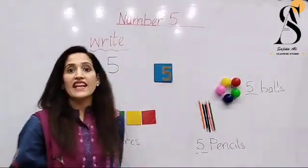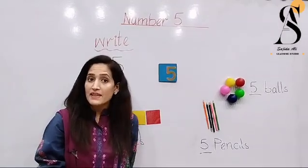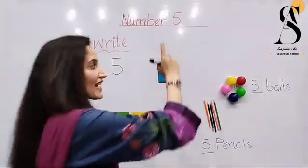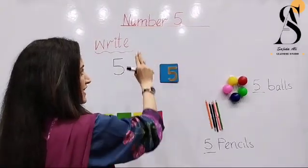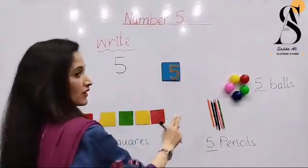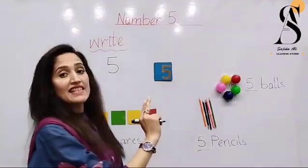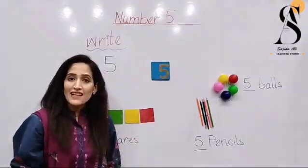So, we have learnt today number 5. Can we write number 5 in the air? Yes, raise up your finger like this. Slipping line, standing line and then backward semicircle. This is number 5. Thank you so much.